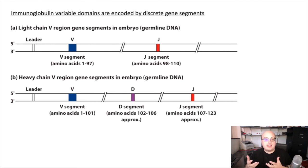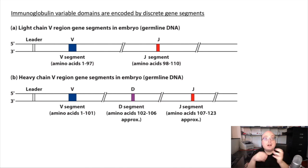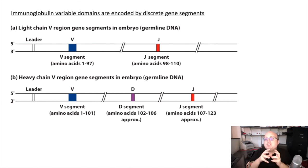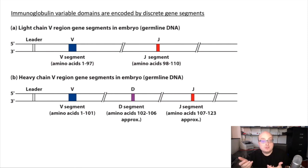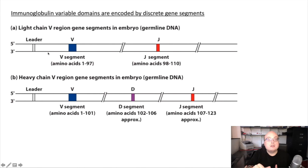A big way that we generate diversity in our lymphocyte receptor repertoire, particularly for immunoglobulins, is that instead of encoding each individual unique antigen receptor in its own gene, we actually have a series of unique gene segments which we can recombine in all sorts of different combinations. In that way, we save real estate in our genome but still encode the possibility for many different types of immunoglobulins capable of recognizing a diversity of different antigens.